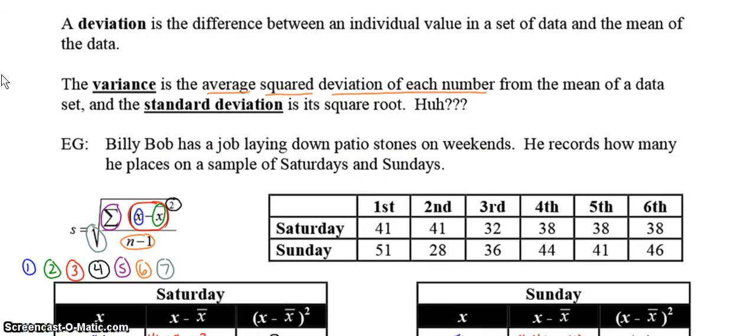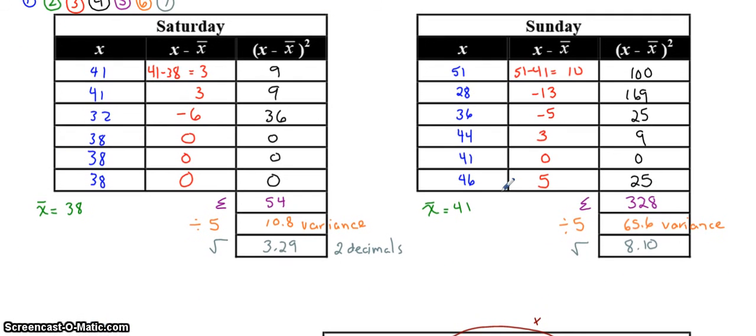So you can see here, on Sunday, there was a bigger spread, a bigger standard deviation, which means the data for Sunday was more spread out or less consistent. And the data for Saturday was less spread out or more consistent.